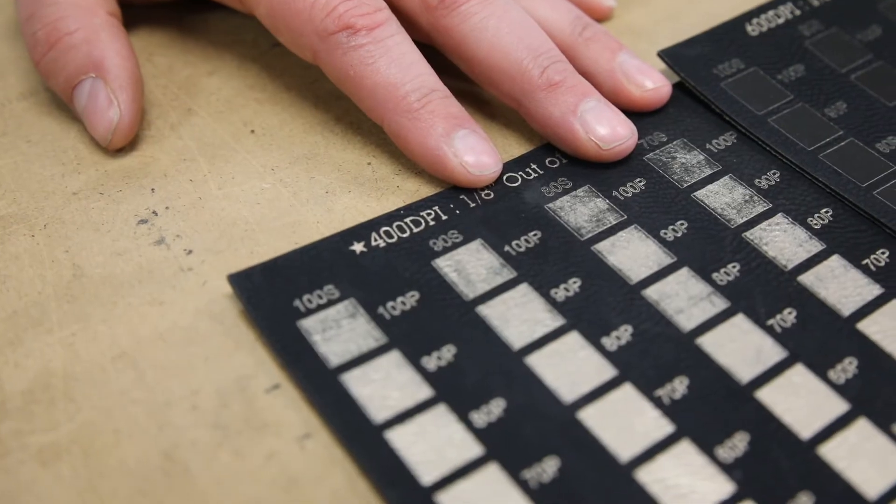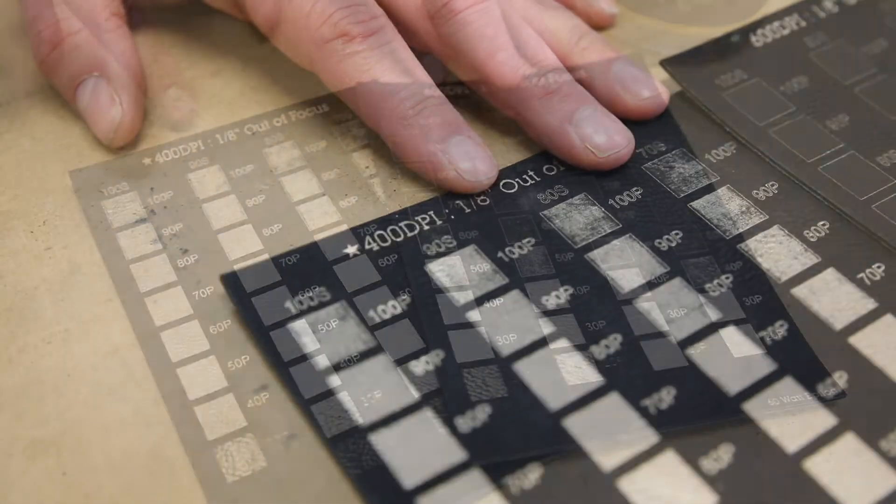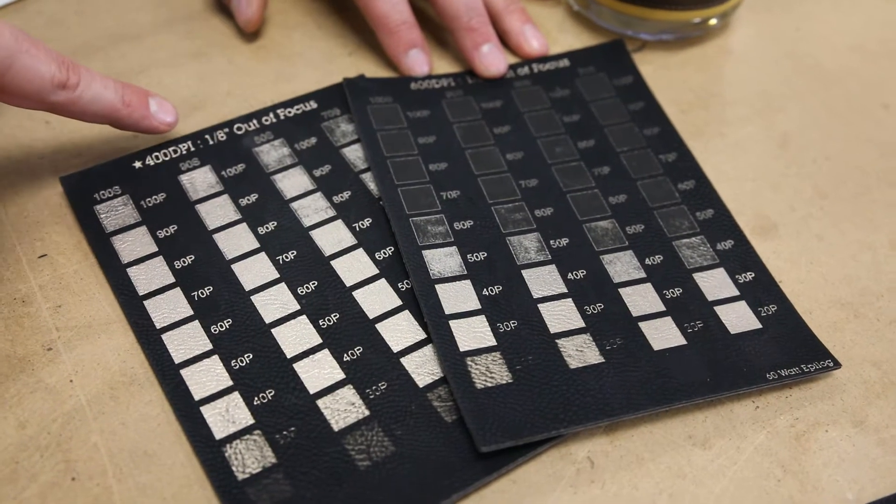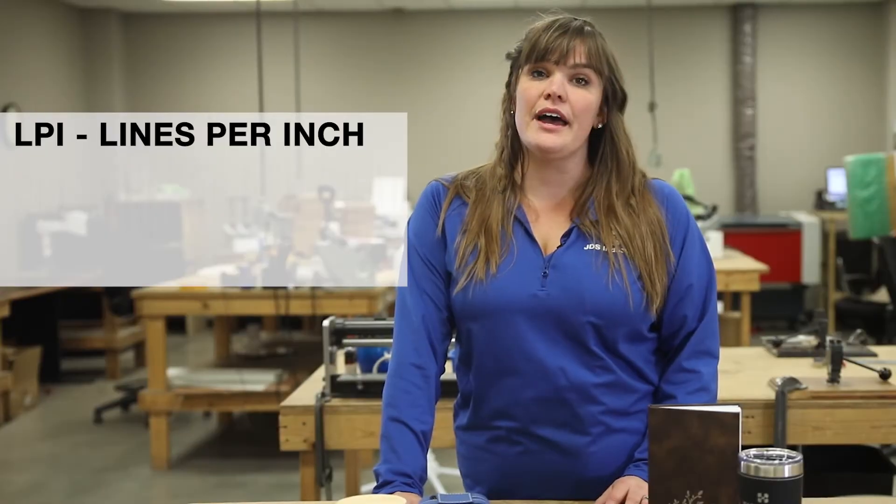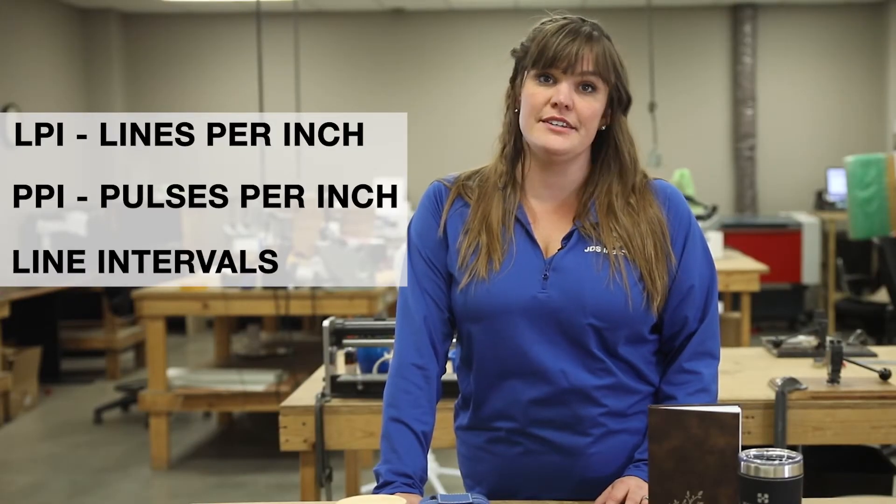If your power is already very low and you're burning through, then move to adjusting the speed. A lower DPI is also going to help with the consistency of the finished look. This is going to have your laser firing less dots per inch. This can also be referred to as LPI, PPI, or line intervals on different machines.